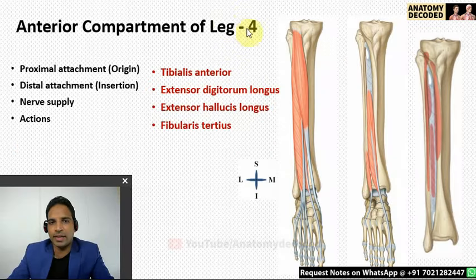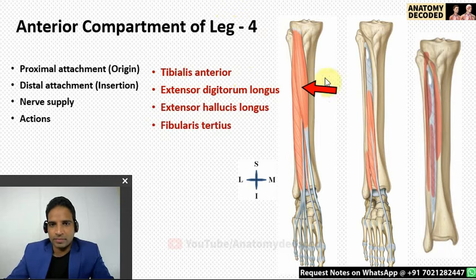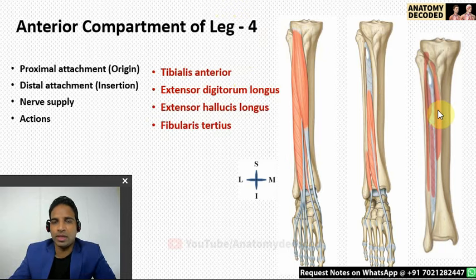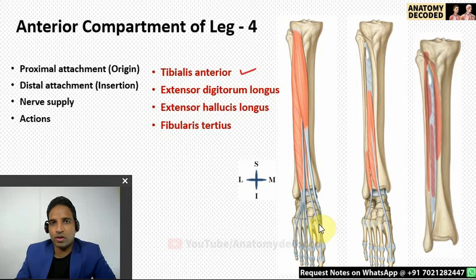Now let's cover the anterior compartment of the leg, which has four muscles. Tibialis anterior has its proximal attachment from the lateral surface of the tibia — the maximum area gives attachment to this muscle. Its distal attachment is along the inferomedial aspect of the base of the first metatarsal and the medial cuneiform bone. The word inferomedial is important because fibularis longus attaches to the inferolateral part of the same bone.